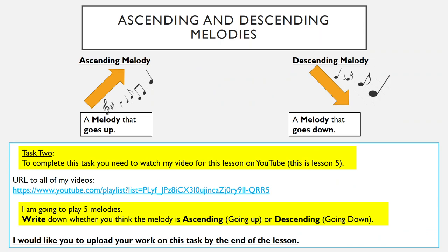Once you have done that, we're looking into ascending and descending melodies. An ascending melody is basically a melody that goes up, and a descending melody is a melody that goes down. It's as simple as that. If you're listening to a melody and the notes go upwards, that's an ascending melody; if the notes go down, that is a descending melody.